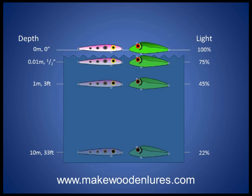Let's start by recapping the concept we covered in Part 1 of this series — the way that light is absorbed by water and therefore the intensity of colours is reduced. In this figure you can see that lures above the surface at 0 metres receive 100% of the daylight and so have 100% colour intensity. But by around 10 metres or 33 feet under really clear conditions, the amount of light received is only about 22% of what strikes the surface, so colour intensity is very much lower.